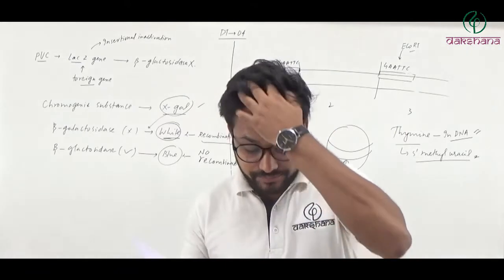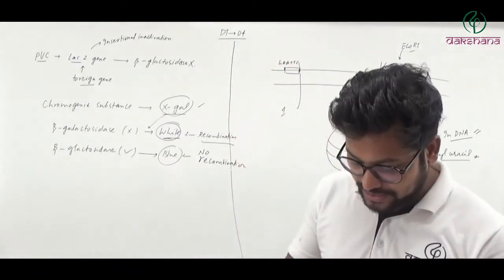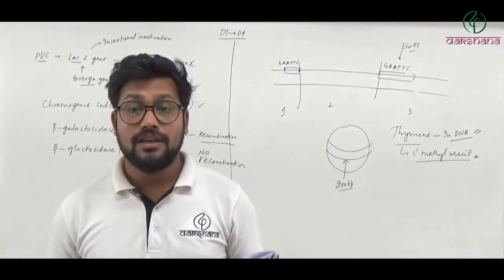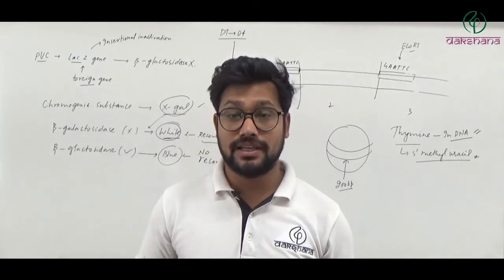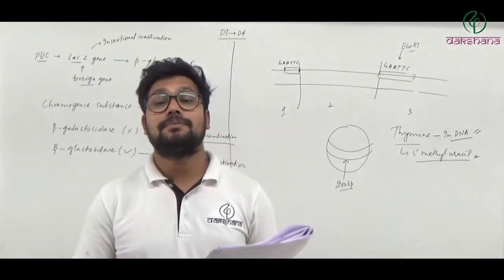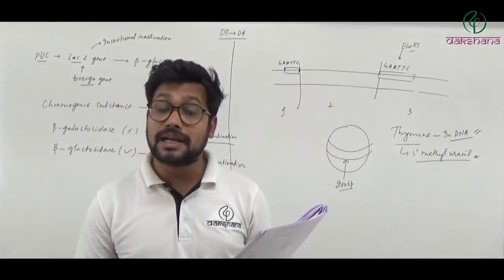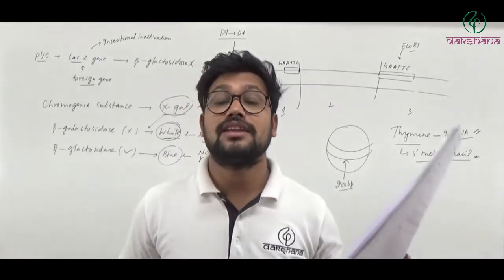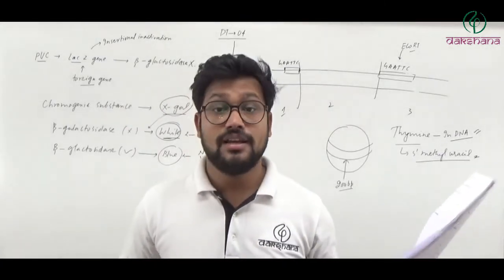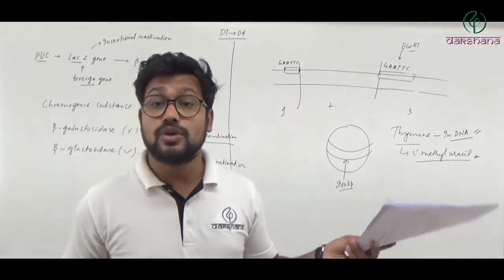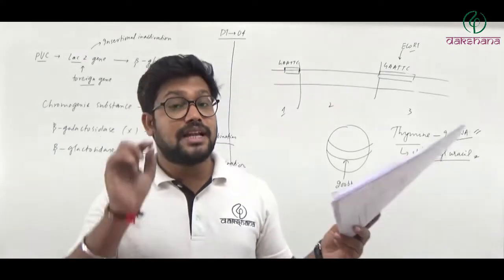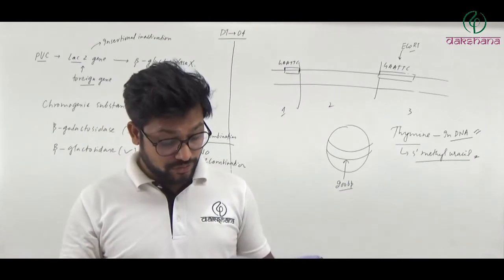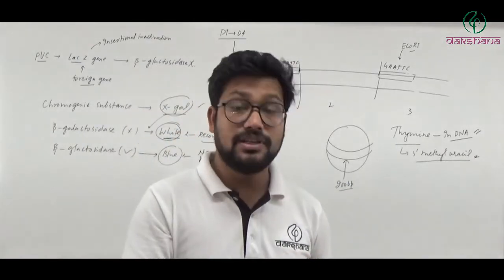Question number twenty-nine: The formation of peptide bonds between two amino acids during translation in E. coli bacterium is catalyzed by what? In translation, peptide bonds are catalyzed by peptidyl transferase, but in E. coli (bacteria), this peptidyl transferase is actually a ribozyme — specifically 23S rRNA. In eukaryotic cells, the equivalent is 28S rRNA. So question number twenty-nine's second answer is the right answer.